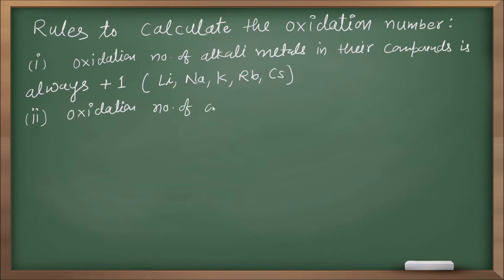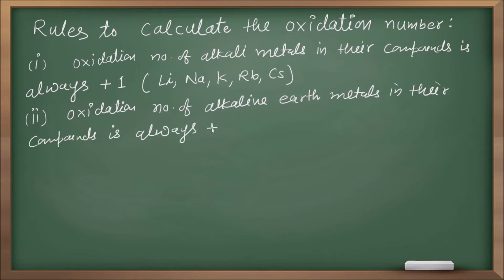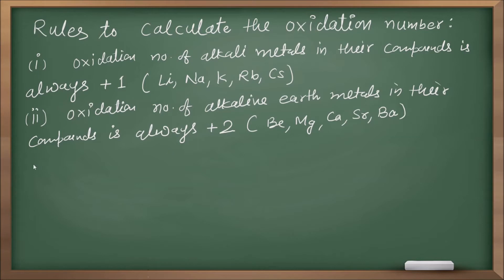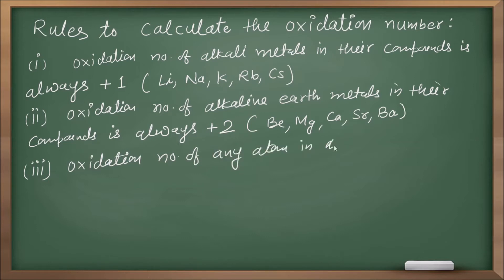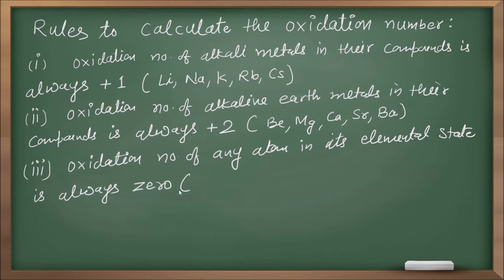Second rule: the oxidation number of alkaline earth metals in their compounds is always plus two. That means beryllium, magnesium, calcium, strontium, barium — their oxidation number will always be plus two.